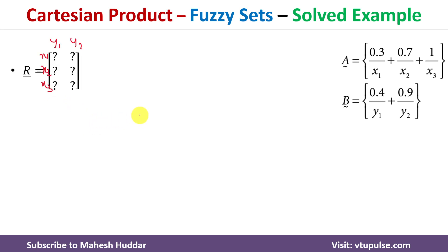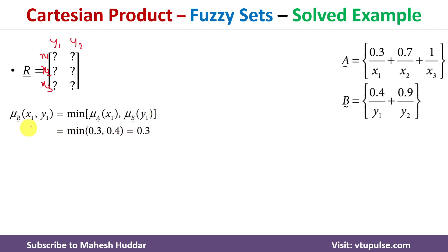The membership value of the fuzzy relation at position (x1, y1) is calculated using this formula: it is the minimum of the membership value of x1 in fuzzy set A and the membership value of y1 in fuzzy set B.